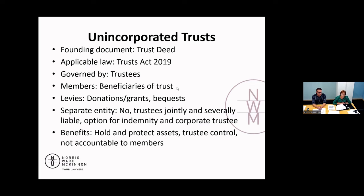Trustees are not accountable to members in the same way, although there are ways that individual beneficiaries can hold trustees to account. For catchment groups with an unincorporated trust, where the object is a purpose rather than individual beneficiaries, people interested in the trust can still hold trustees to account because the court has a supervisory jurisdiction over how a trust is operated. Trustees have personal liability and must bear in mind that people can hold them to account if they're not acting in accordance with their trust deed or their general duties under the law.